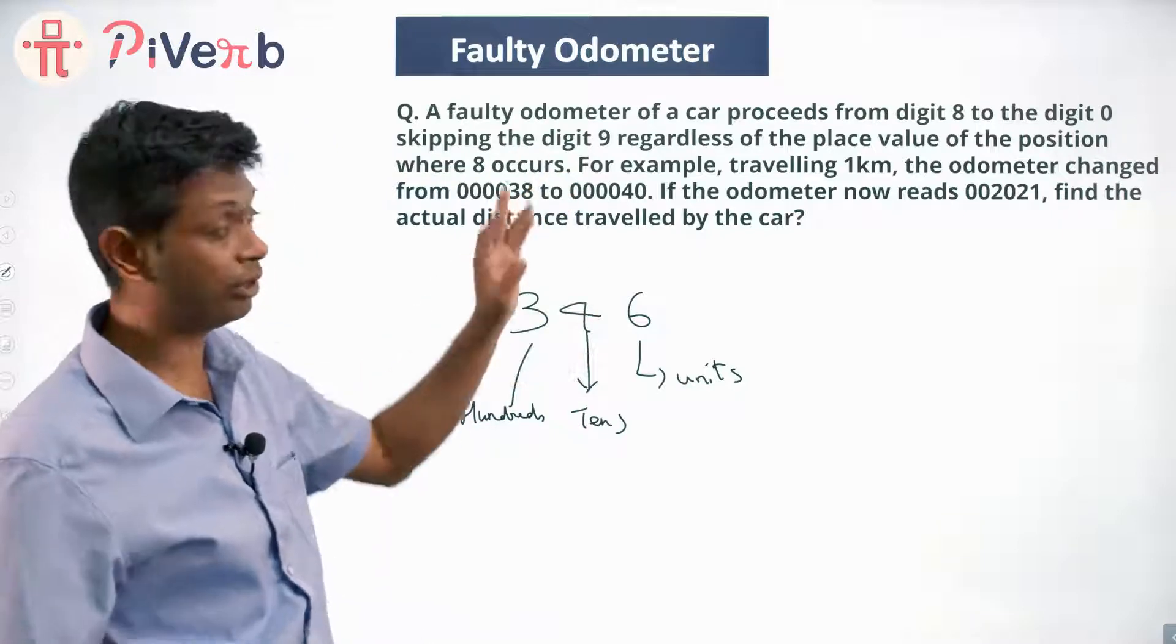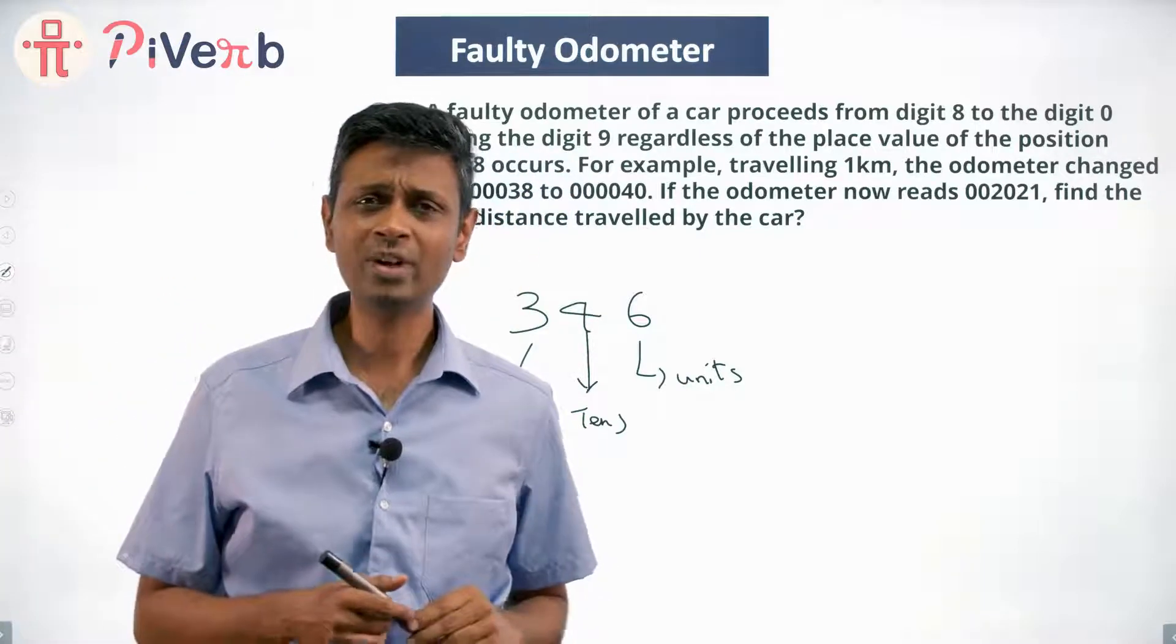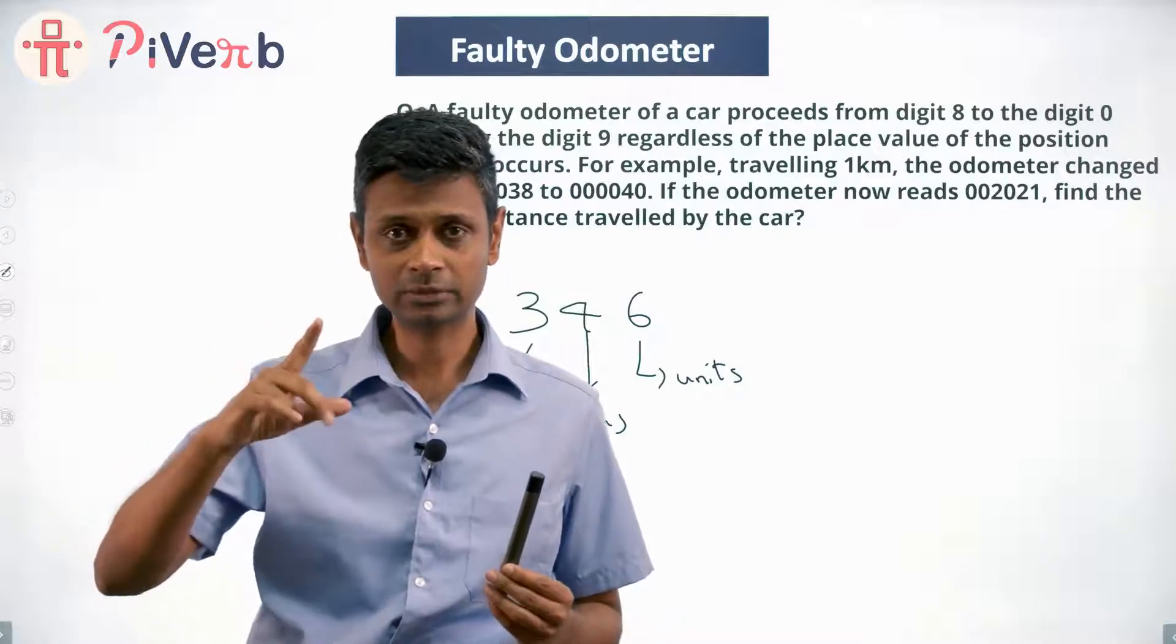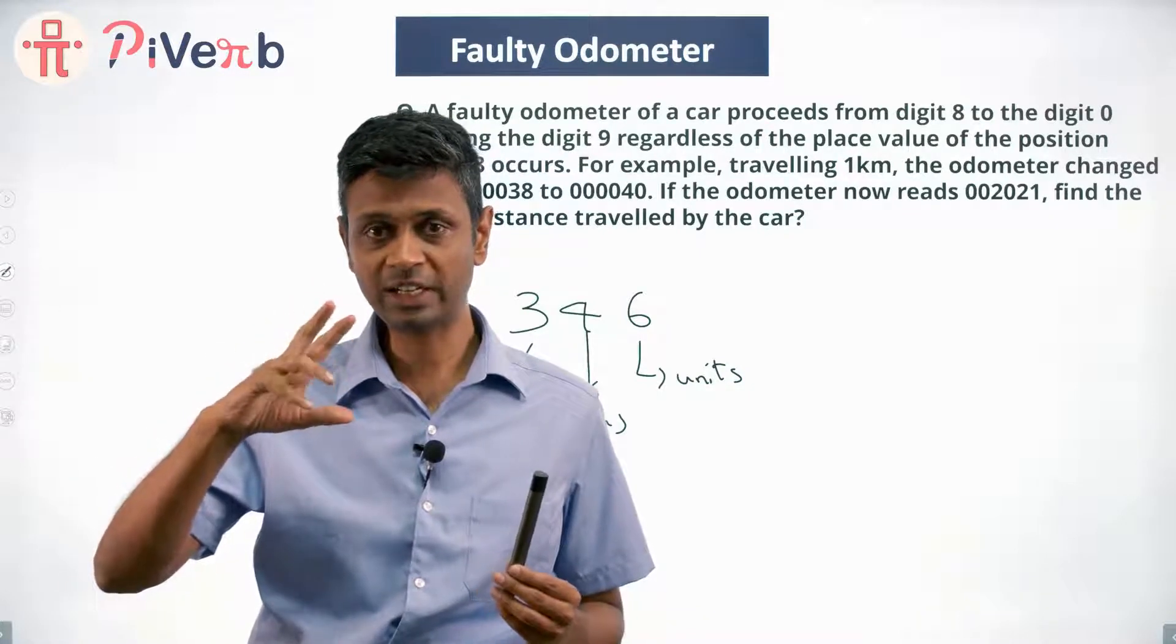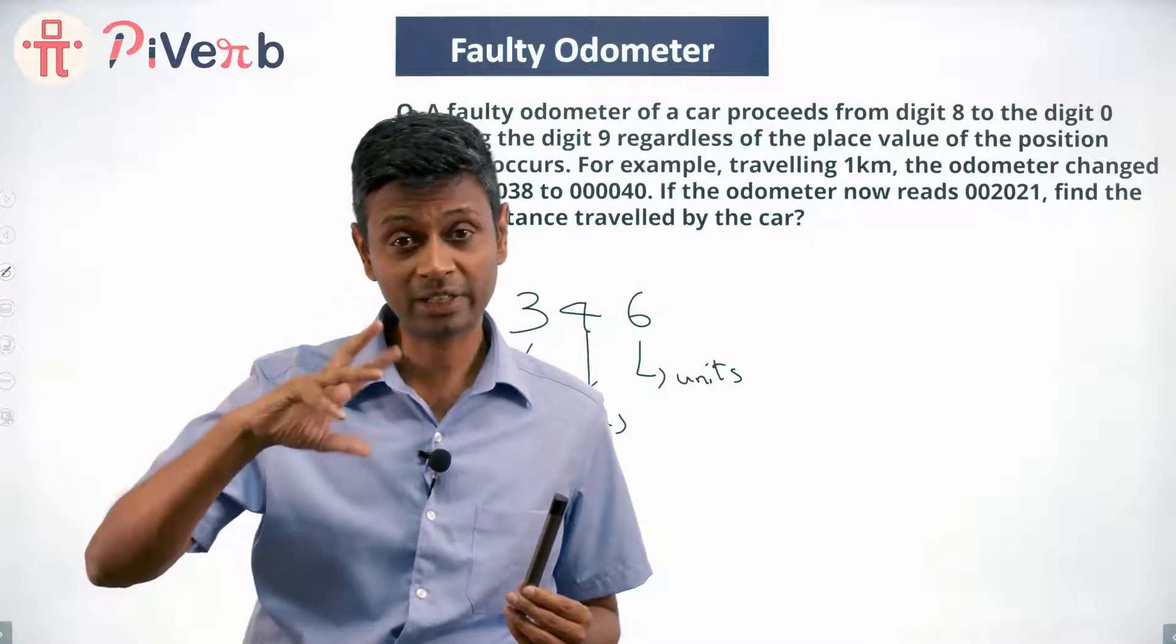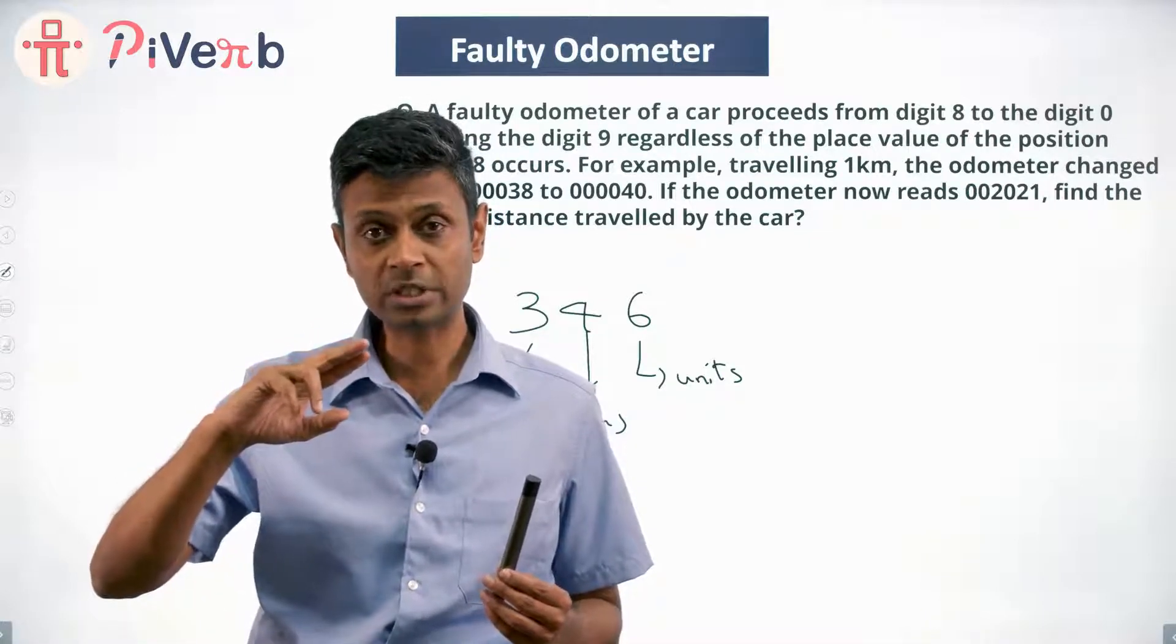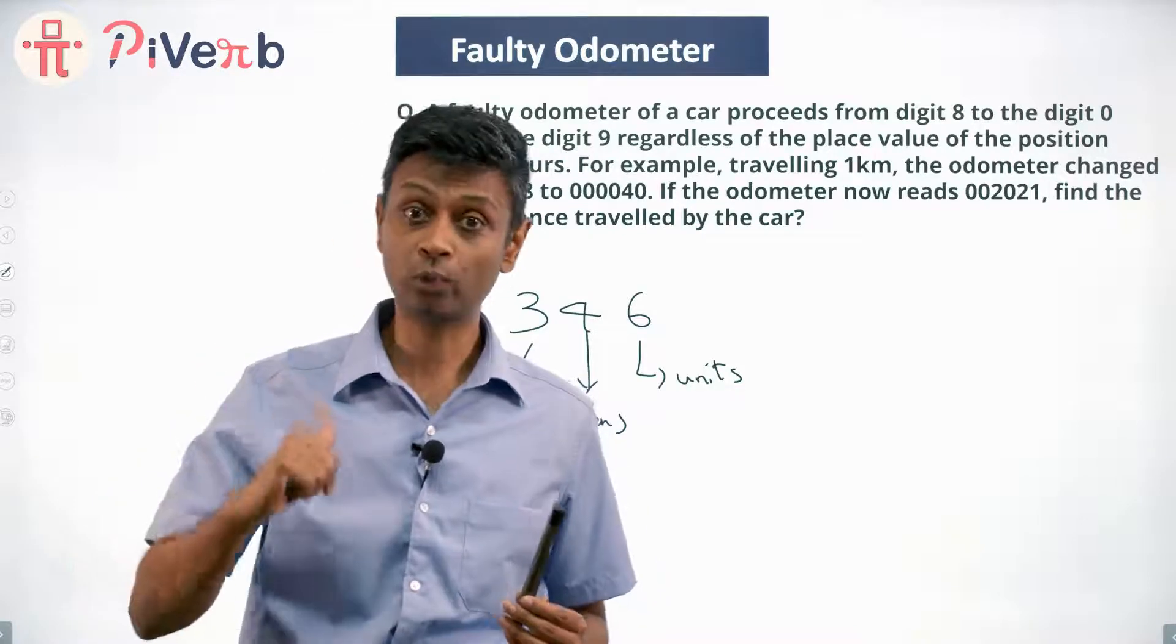In this odometer which is broken, we don't have a 9. After every 9, we go to the next digit: 0, 1, 2, 3, 4, 5, 6, 7, 8 and then instead of 9 we have 10, 11, 12, 13, 14, 15, 16, 17, 18, instead of 19 we have 20.